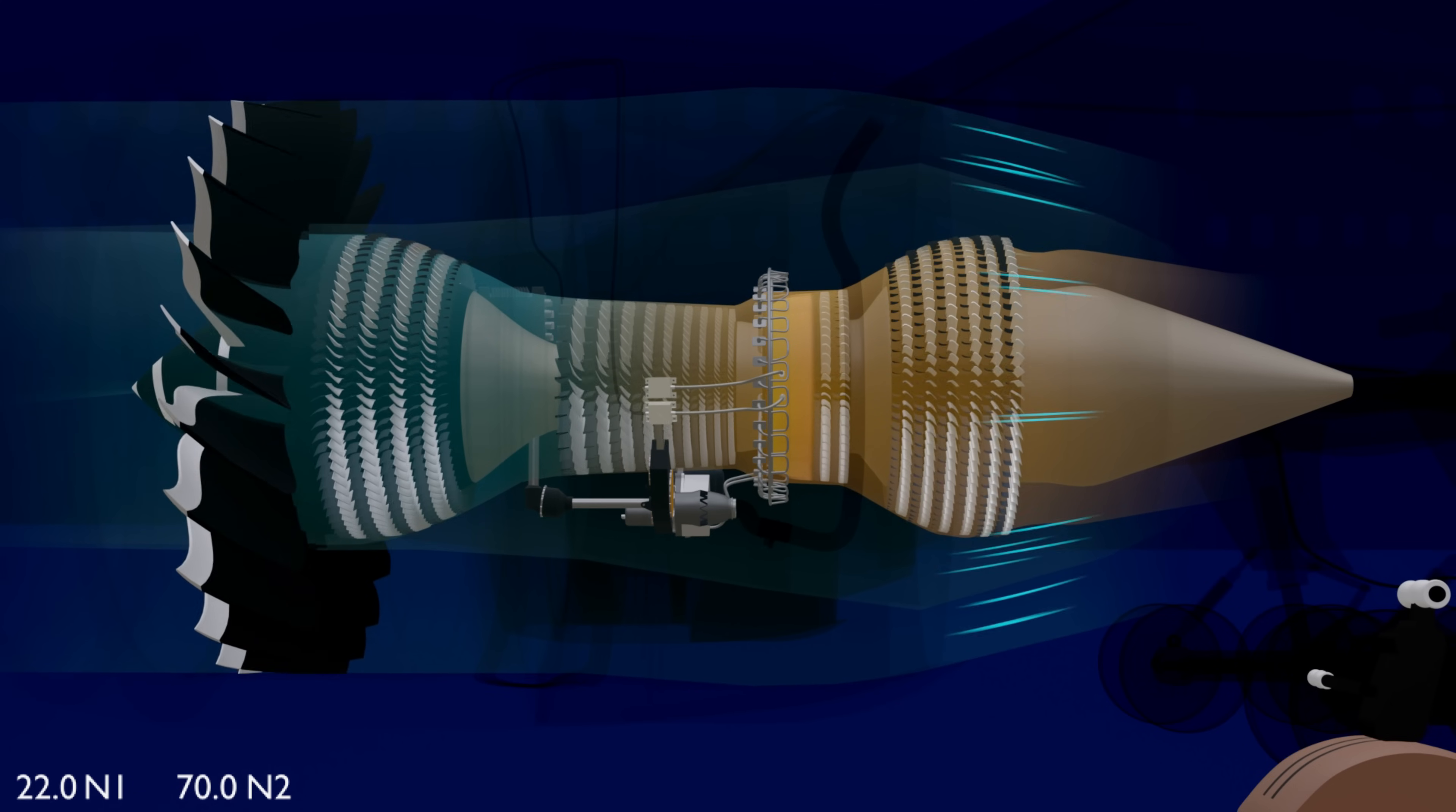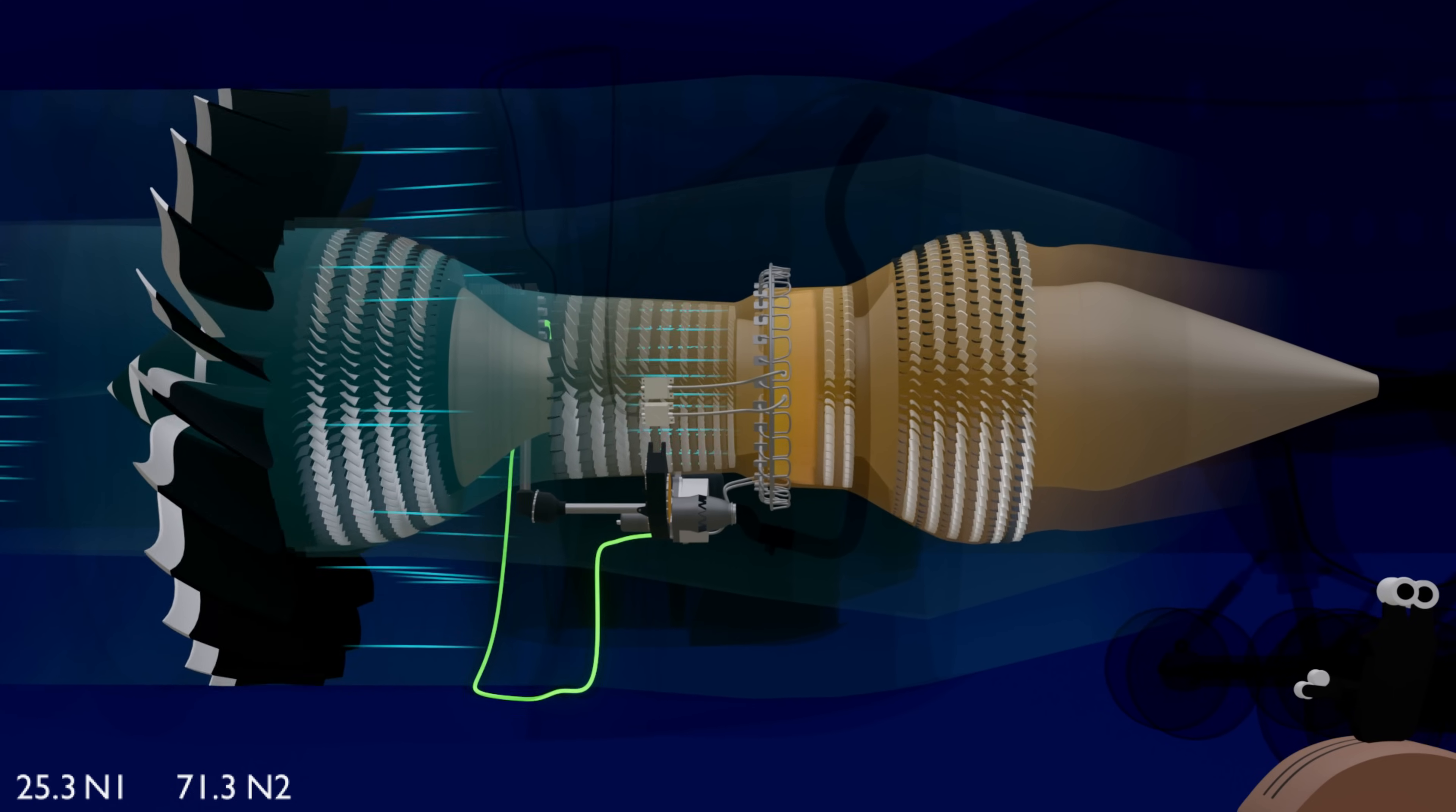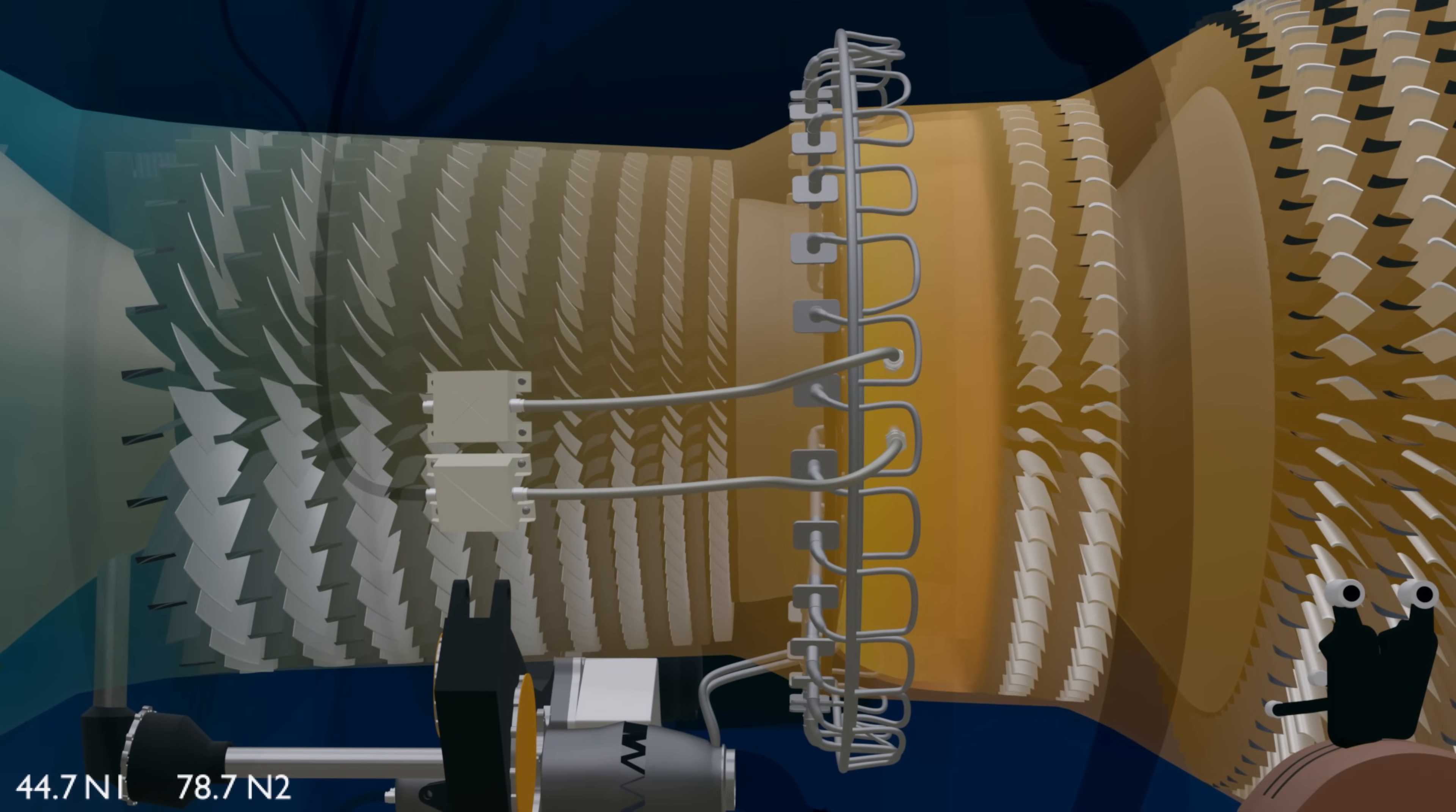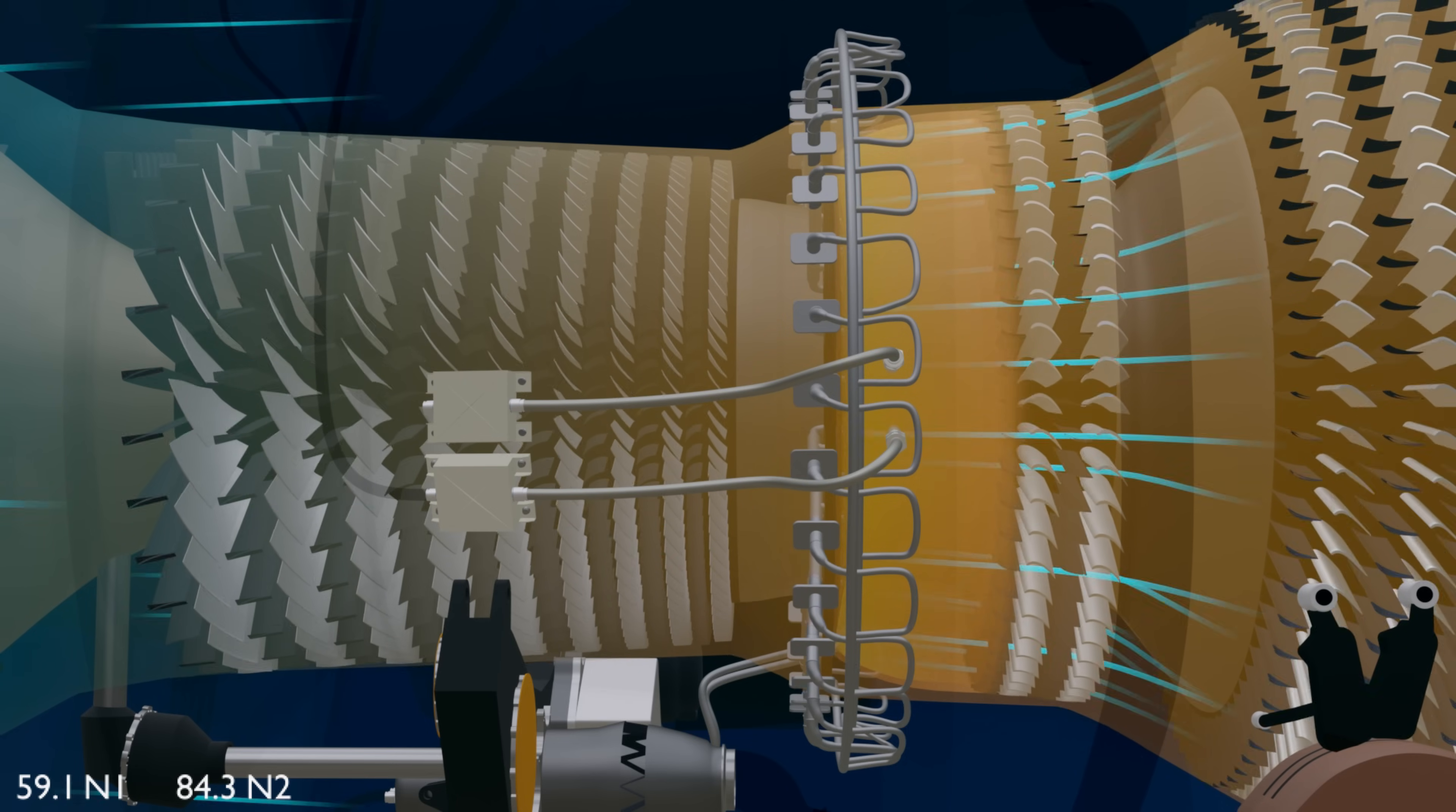Advancing the lever from idle sends a signal to the electronic engine control. The EEC commands the hydro-mechanical unit to adjust the fuel metering valve in proportion to the thrust lever position. The HMU increases the fuel flow rate to the combustion chamber and matches the engine thrust to the lever settings.